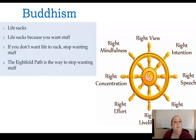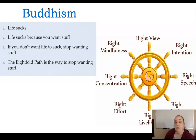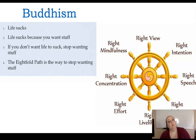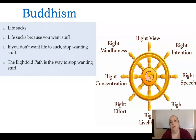Here's a simplistic view of the Four Noble Truths and the Eightfold Path: life sucks; life sucks because you want things; if you don't want life to suck, you've got to stop wanting stuff; and the Eightfold Path is the way to stop wanting stuff. It's simplistic, but in a way it's not wrong.